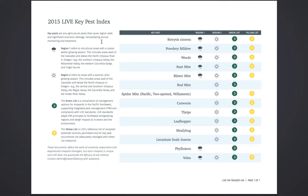If you are dealing with a pest that's not listed for your region, or not on this list at all, contact Live for assistance. The circles are links to other pages in the document. Green circles will take you to the green list entry for the pest or disease, and yellow circles will take you to the yellow list entry.